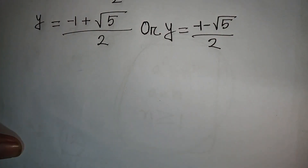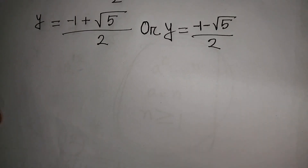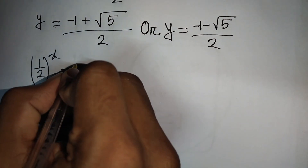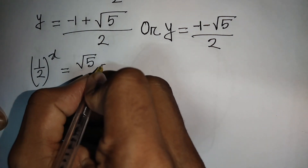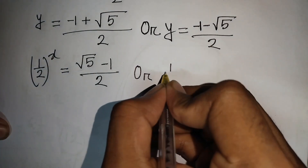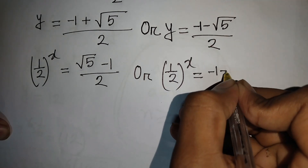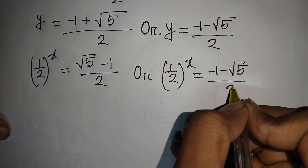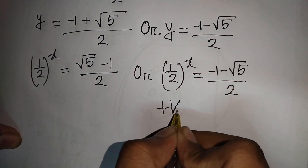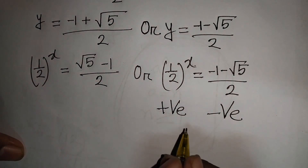Recalling that y equals (1/2) to the power x, substituting back: (1/2) to the power x equals negative 1 minus root 5 over 2. Since the left side must be positive and the right side is negative, this case is rejected.